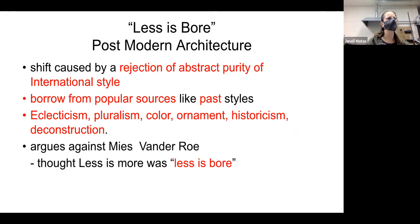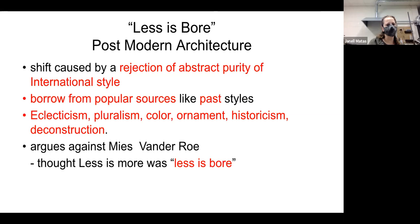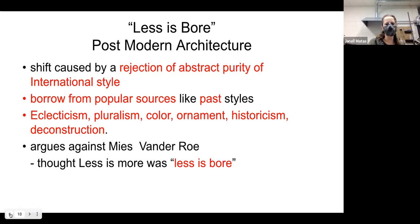Postmodernism involves a rejection of the purity of the international style. We'll see buildings that borrow from popular sources as well as past styles, with a lot of neo-styles. There's a sense of eclecticism, pluralism, color, ornamentation, historicism, and deconstruction. It really does get elaborate — sometimes over the top. Some of these early pieces are considered a bit gaudy today.